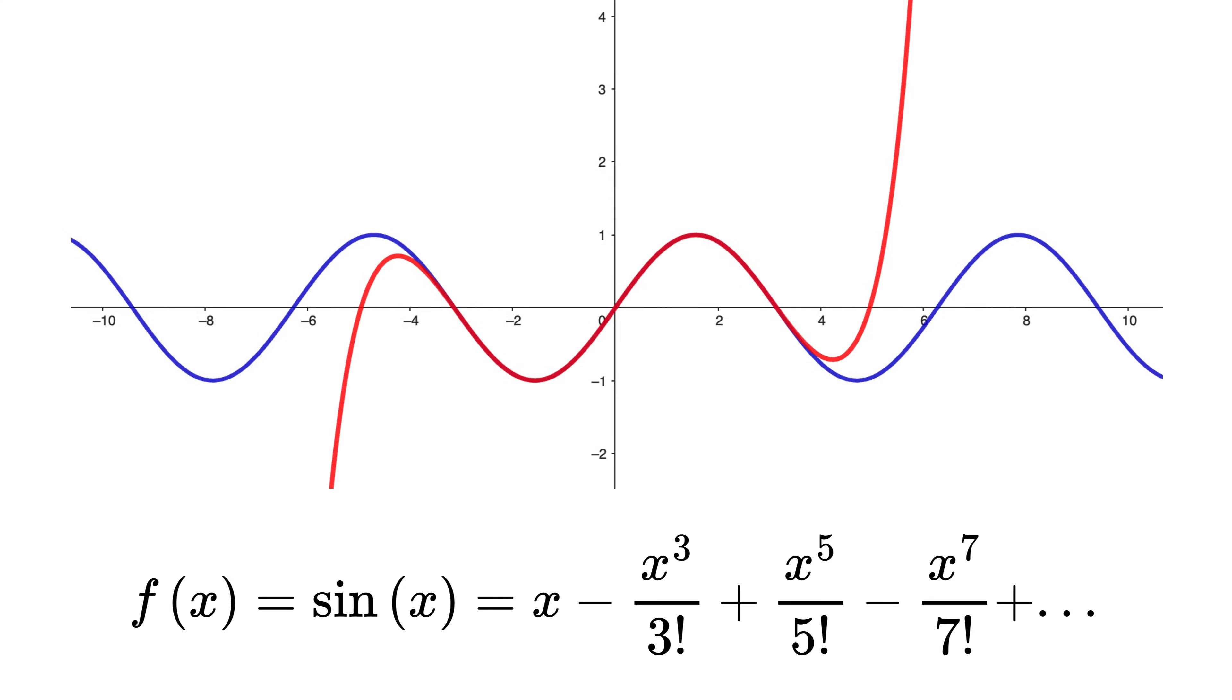Now we keep going. Let's subtract x to the power 7 divided by 7 factorial, add the next term, subtract the next—alternating plus and minus. The powers of x keep increasing by 2 each time, and the numbers in the denominator become bigger and bigger factorials.